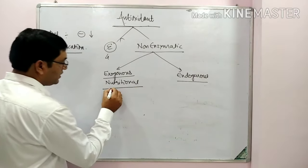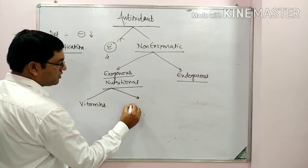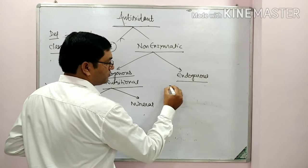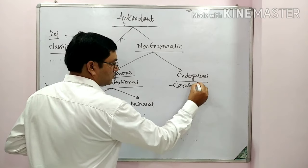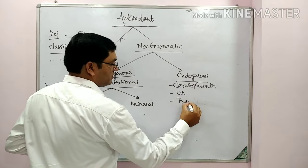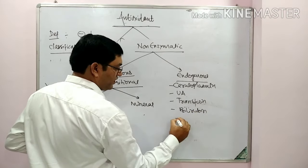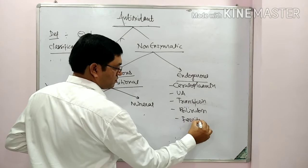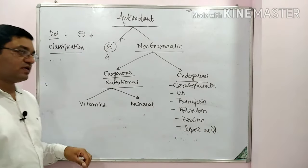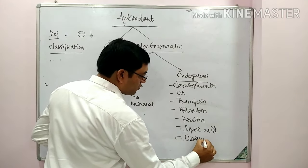The exogenous/nutritional non-enzymatic antioxidants are divided into vitamins and minerals. Endogenous compounds that act as antioxidants include ceruloplasmin, uric acid, transferrin, bilirubin, ferritin, lipoic acid, ubiquinone (coenzyme Q), and phytochemicals produced from plants also act as antioxidants.